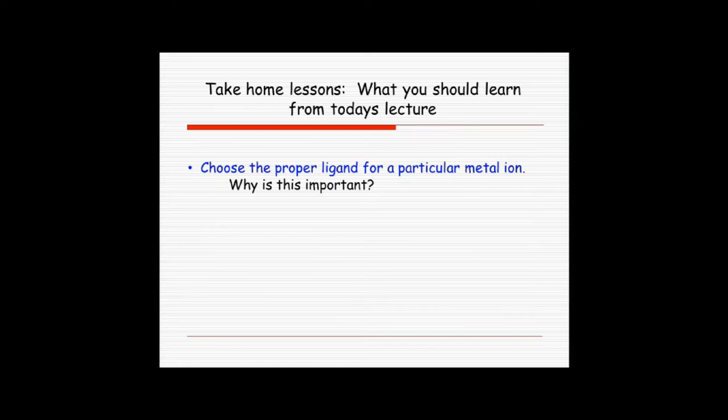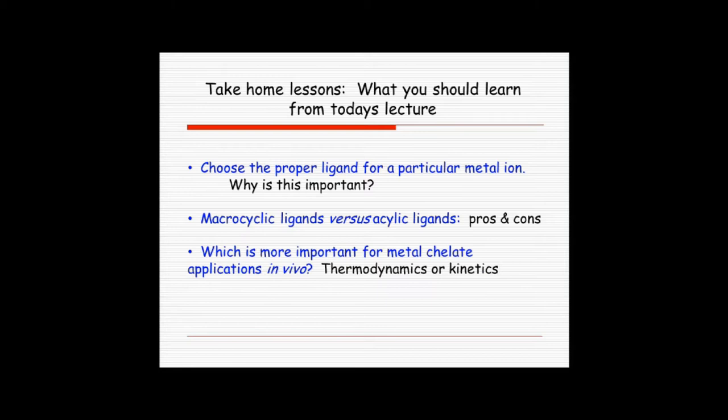What I hope that you would learn from this lecture today is how to choose a particular ligand for a particular metal ion. It seems as though oftentimes people simply choose what's available, perhaps commercially. That may or may not work. So it's important to think about what you're doing. Macrocyclic ligands versus acyclic ligands, there are pros and cons to each of them. And then which are more important for metal chelate applications, thermodynamics or kinetics. Most people think about thermodynamics as being the important parameter here. What I'd like to convince you of is that kinetics may in fact be more important for in vivo applications.